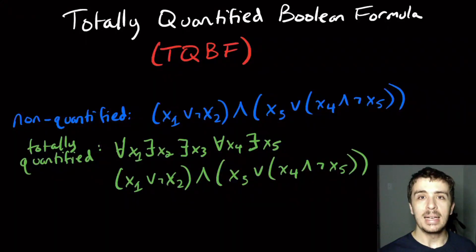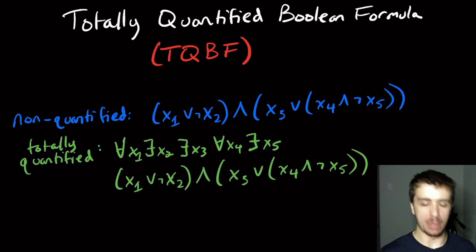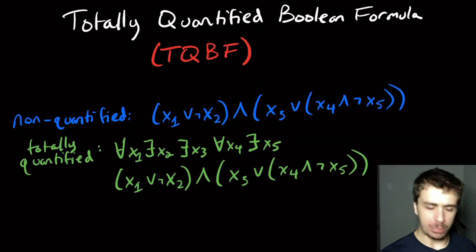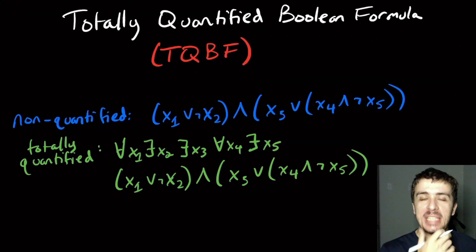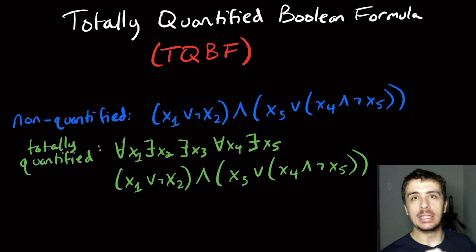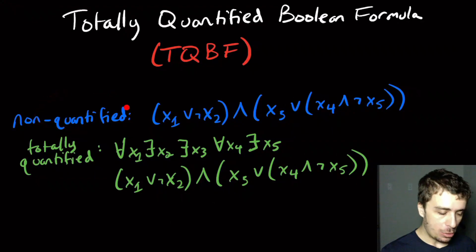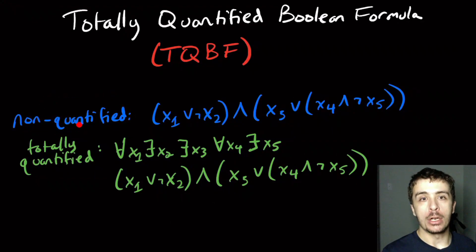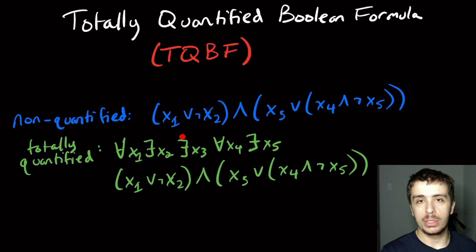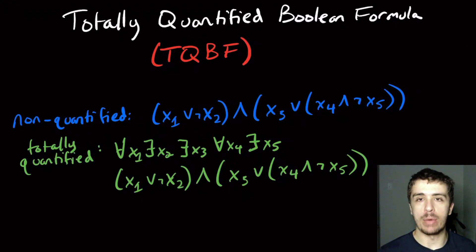I want to talk about the Totally Quantified Boolean Formula, or TQBF, problem. If you know what SAT and boolean formulas are, this is actually very similar — it's just a generalization of them. A normal, non-quantified formula is just a normal boolean formula: you have ORs, variables, NOTs, ANDs, and you can combine them in any way you want.